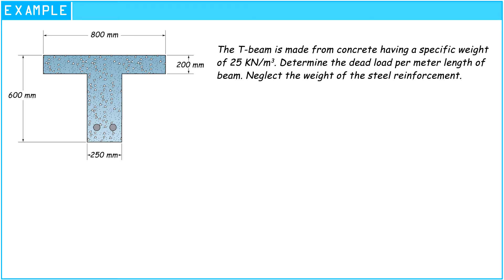The T-beam is made from concrete having a specific weight of 25 kN per cubic meter. Determine the dead load per meter length of beam. Neglect the weight of the steel reinforcement.